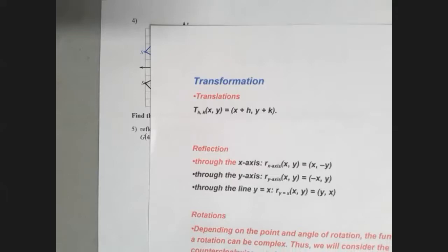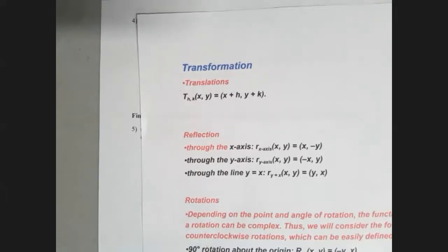So as you see right there it's y-axis or lowercase r_y-axis (x,y) and it's going to become negative x comma y. So that says you want your y values stay the same and your x values will become the opposite. That's what that negative means there.